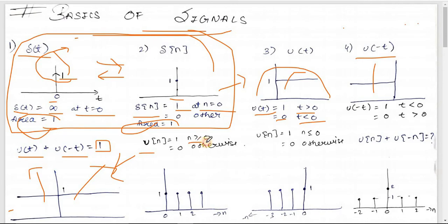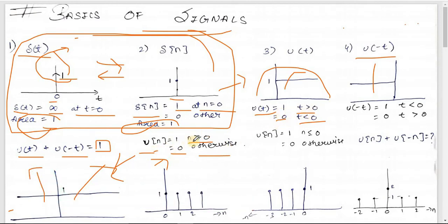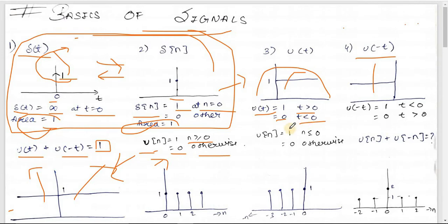For the discrete unit step u[n]: it equals 1 for n≥0 and 0 otherwise. Note the difference from u(t) — in u[n], it is explicitly 1 at n=0. In the continuous domain, Gibbs phenomenon gives u(0) = 1/2 by averaging the transition values: (0+1)/2 = 1/2. In the discrete domain, u[0] = 1 directly.